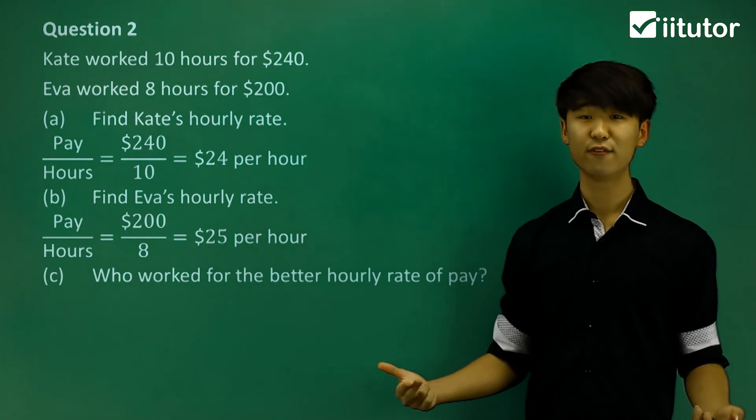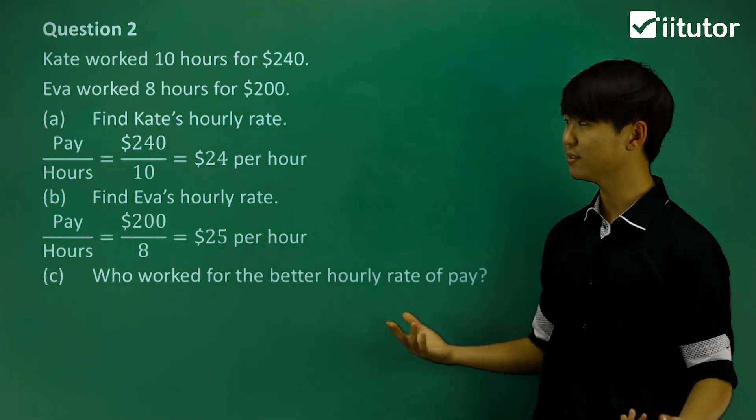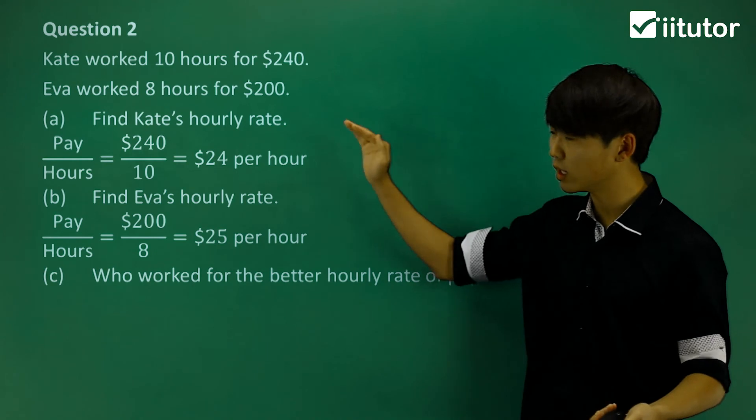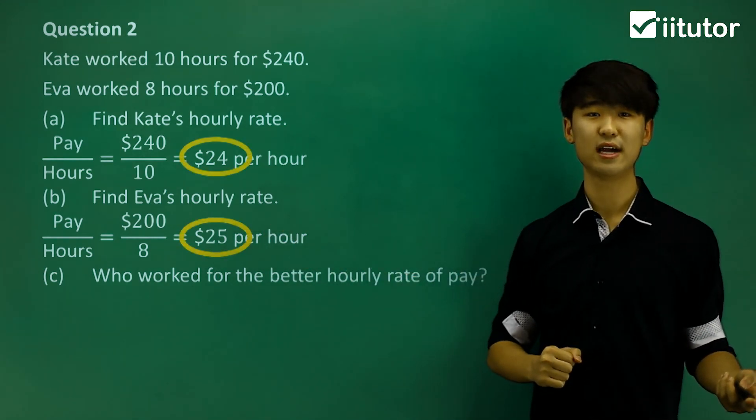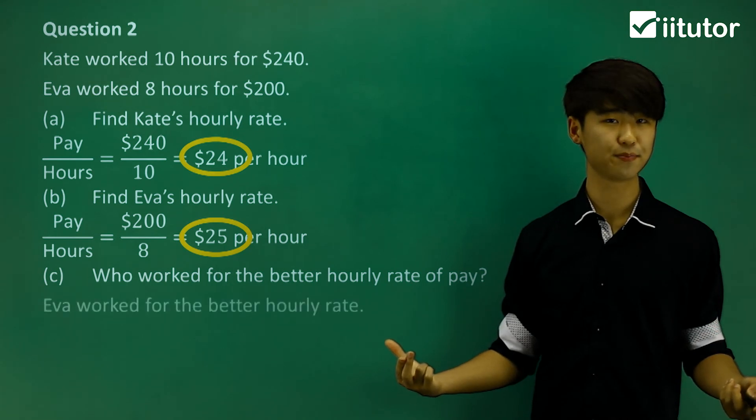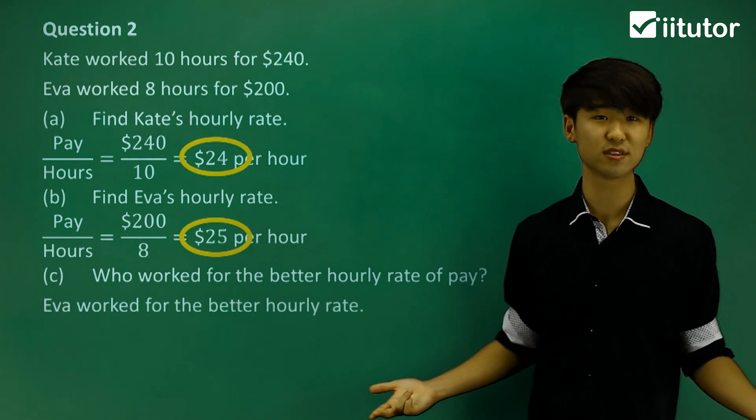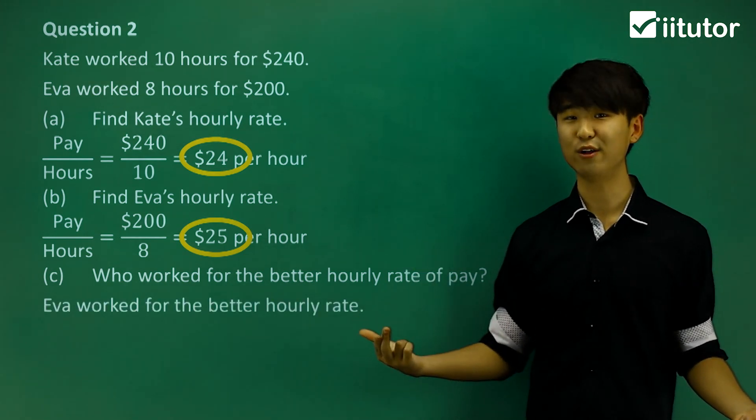Who worked for the better hourly rate of pay? So if you were them, which one would you prefer? Well obviously, Eva had a more higher rate of pay. $25 over $24. So Eva worked for the better hourly rate here.